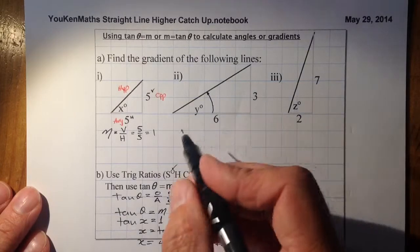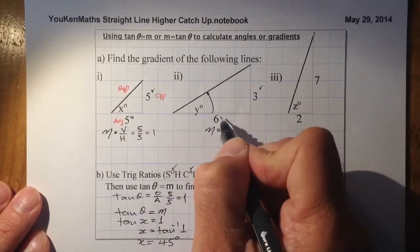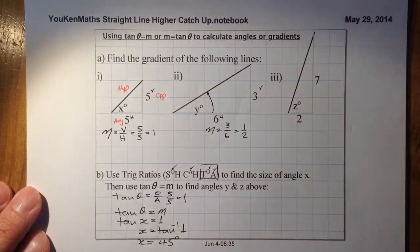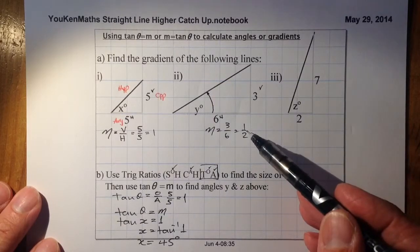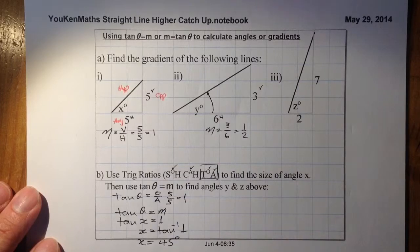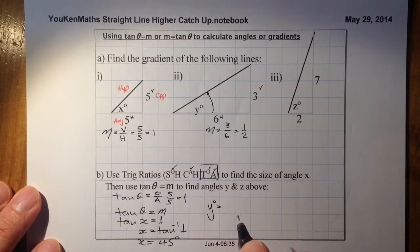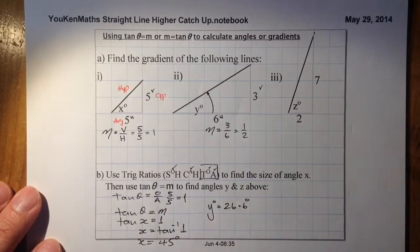The gradient of the line in question 2 is vertical over horizontal, which is 3 over 6, giving a gradient of one half. Using tan θ equals the gradient and substituting in one half, the angle y works out to be 26.6 degrees to one decimal place.